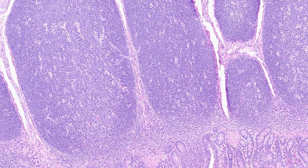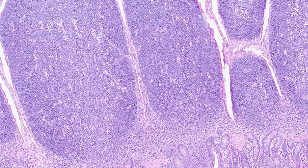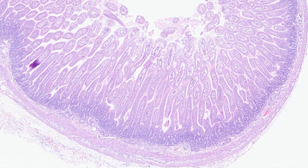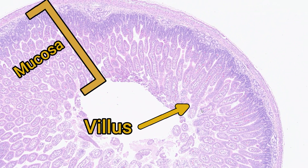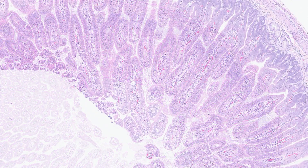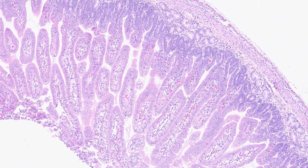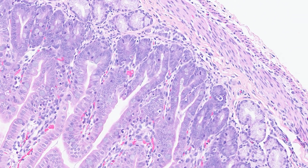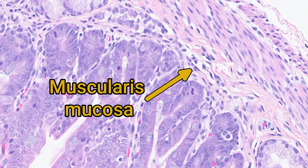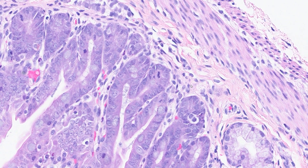Let's first study the basic structure at low and high power. At low power we can see the main distinguishing feature of the small intestine: the mucosa is highly folded, forming finger-like projections into the lumen. These are the villi. Underneath the villi there is a layer of smooth muscle called the muscularis mucosa, though it's not particularly obvious in this section.